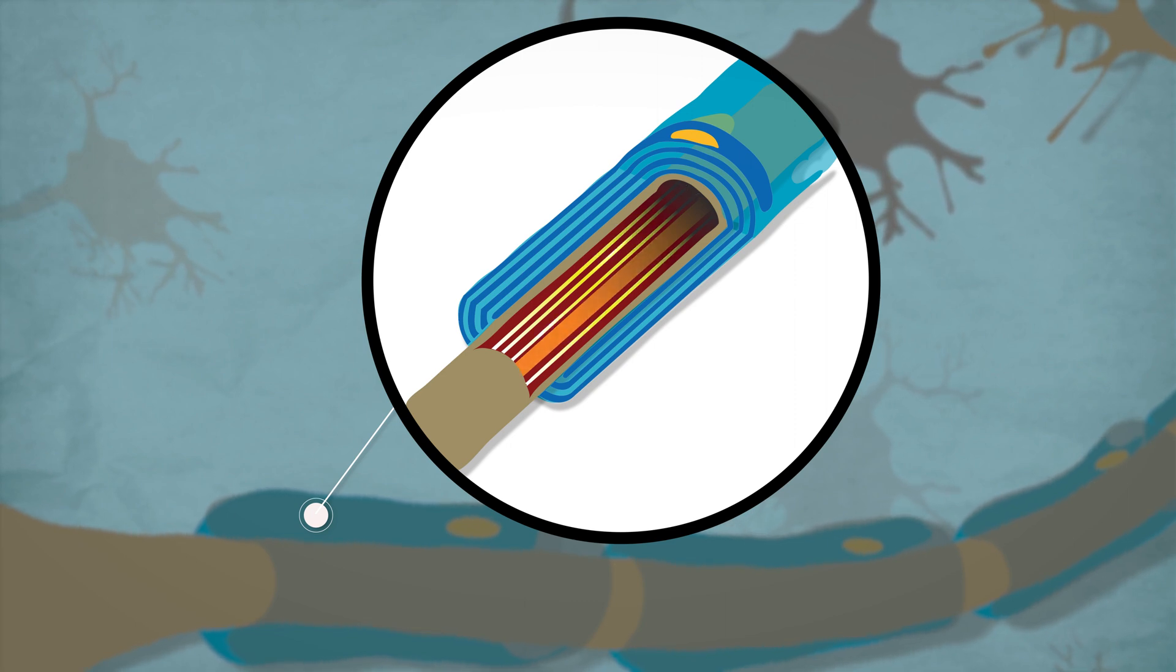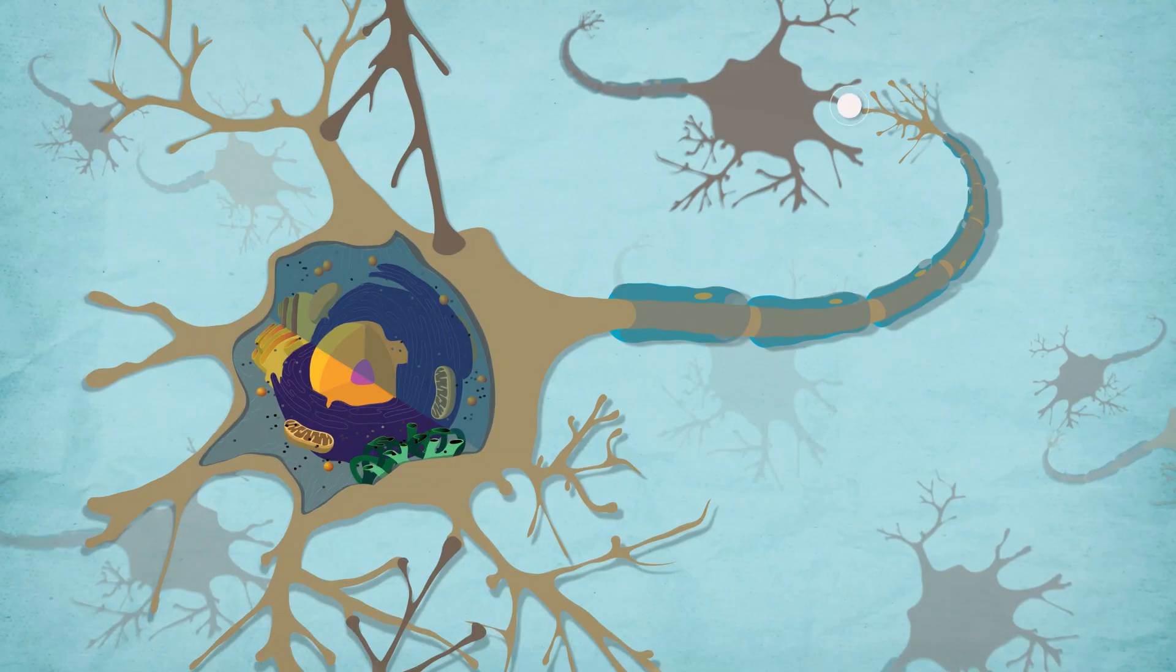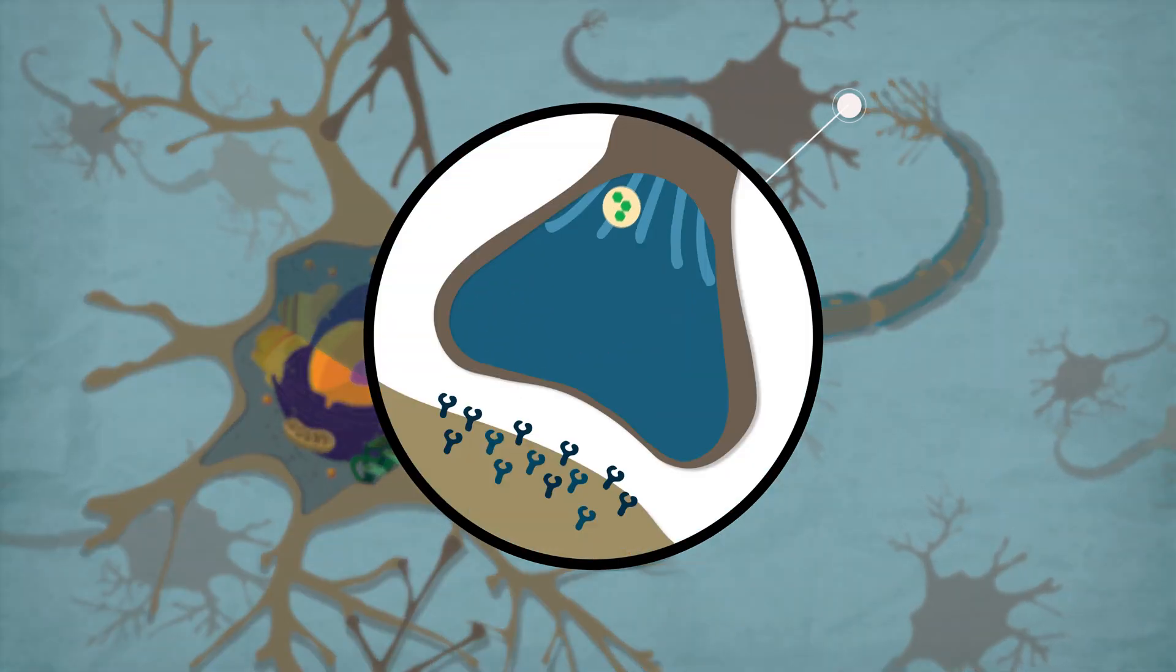The axon terminals make connections called synapses with other cells, using neurotransmitters as signals.